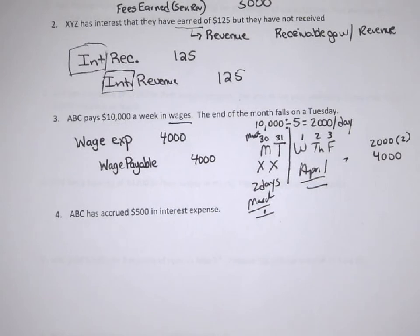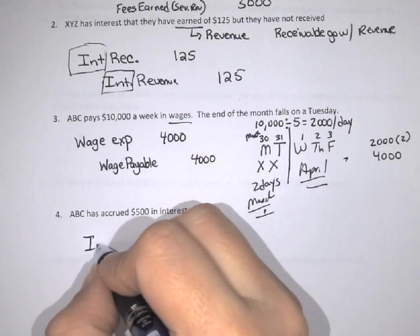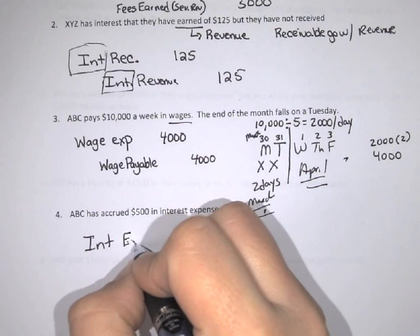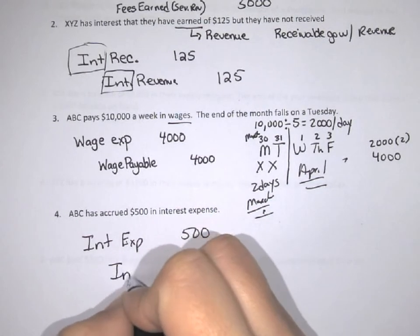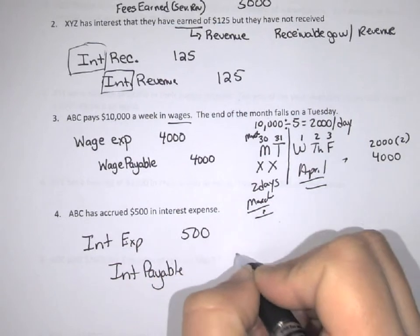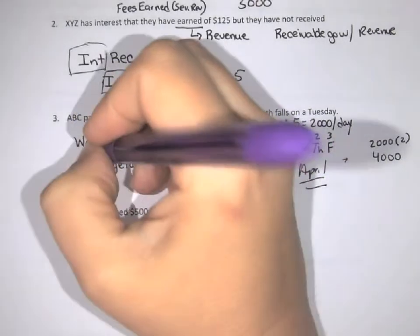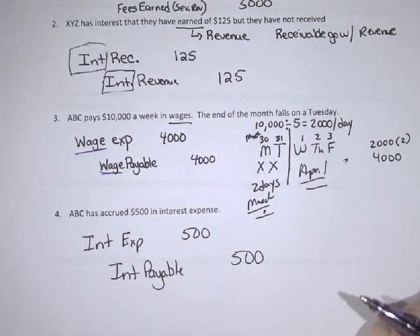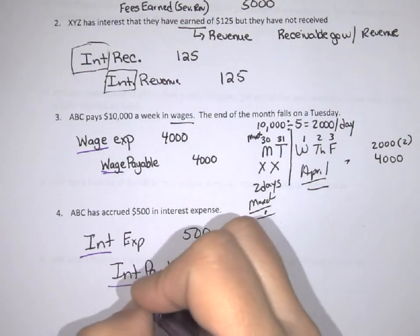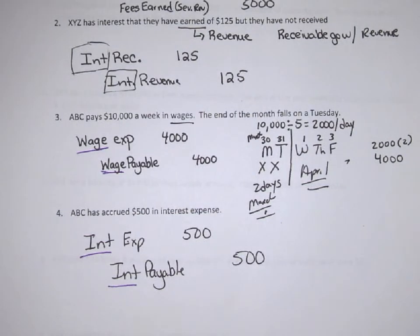The last one is ABC has accrued $500 in interest expense. There's a note out there and we owe someone money and we haven't paid them the interest yet — we may pay it when the loan comes due. In this particular case, you're going to have that interest expense of $500, and you owe this money, so that's going to be an interest payable item for $500. Notice that wage expense and wage payable share the same beginning, and interest expense and interest payable share the same beginning as well.